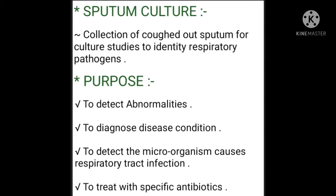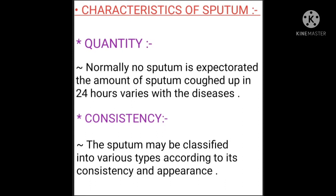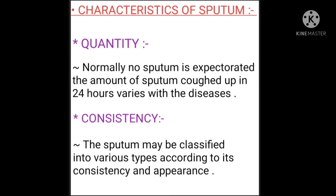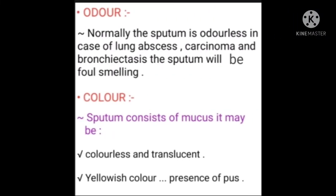The last purpose is to treat with specific antibiotics. Moving on to characteristics of sputum — first is quantity: normally no sputum is expectorated, and the amount of sputum coughed up in 24 hours varies with the disease. Next is consistency: sputum may be classified into various types according to its consistency and appearance.